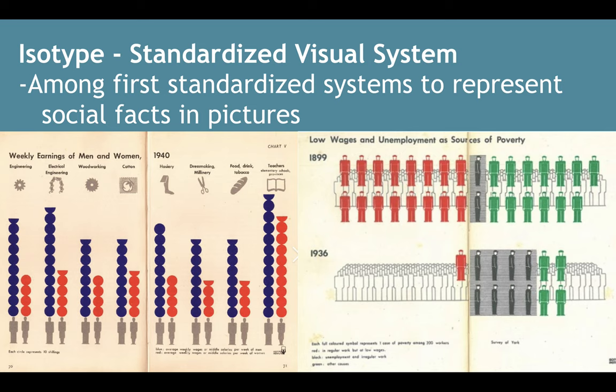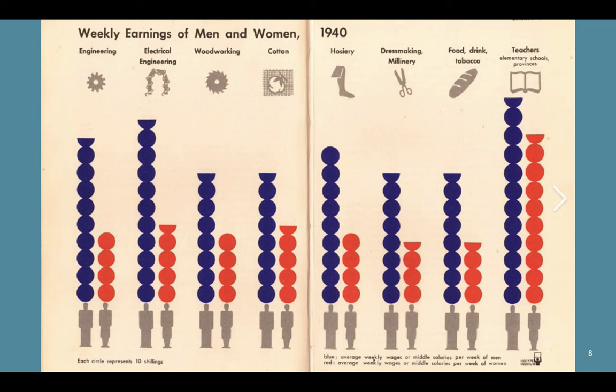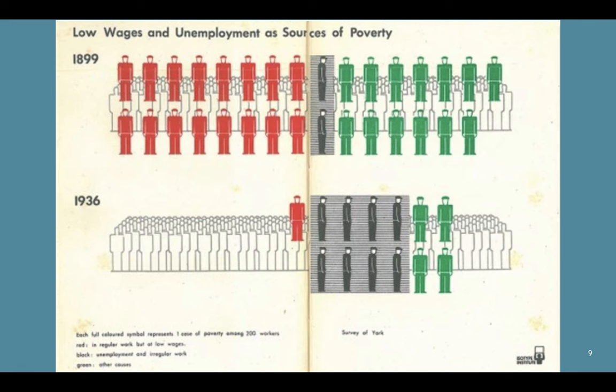One of its hallmark revolutions and innovations was that it's among the first standardized systems to represent social facts in pictures. This first example is weekly earnings of men and women in 1940. You can see the various categories at the top — engineering, electrical engineering, etc. — and at the bottom you see how they compare.